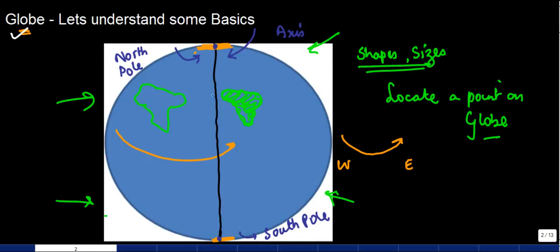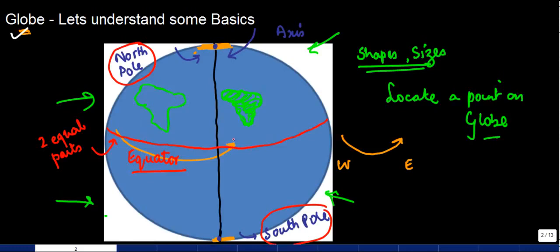So this is basically the axis. There is another imaginary line which passes somewhere through this middle, and the beauty is that this line basically divides the earth into two equal parts. What is this line called? I know quite a few of you might be aware, this is known as the equator. This is the North Pole, this is the South Pole, and this equator divides this earth into two equal parts.